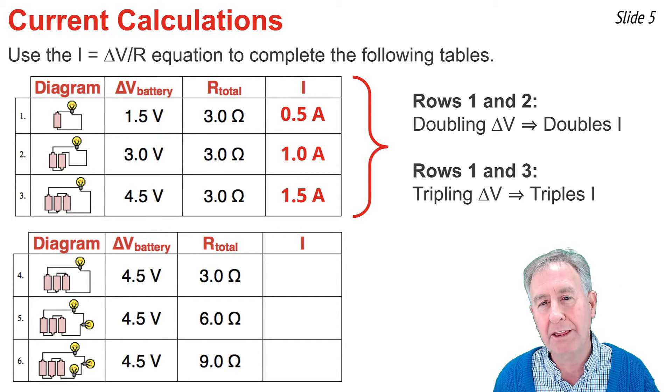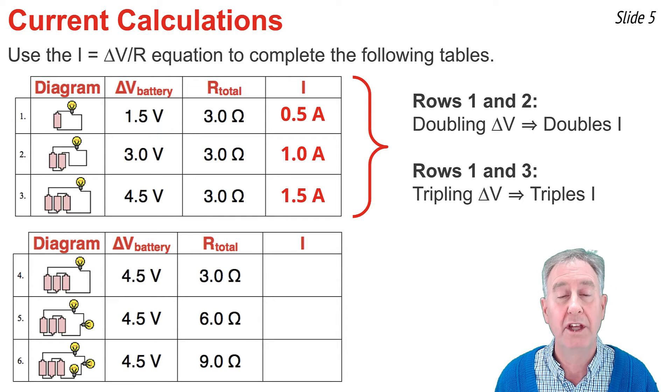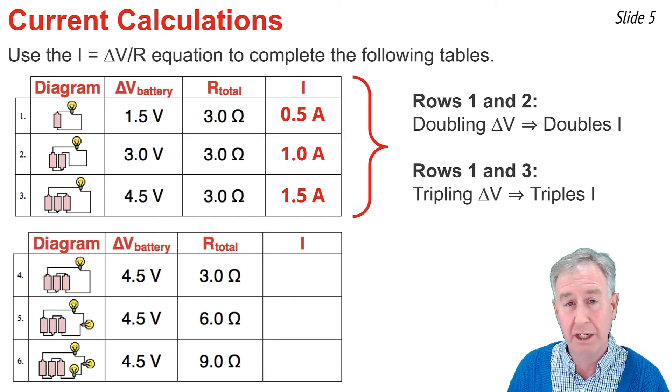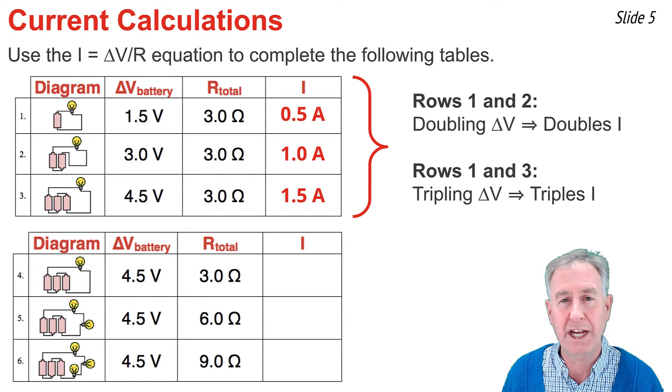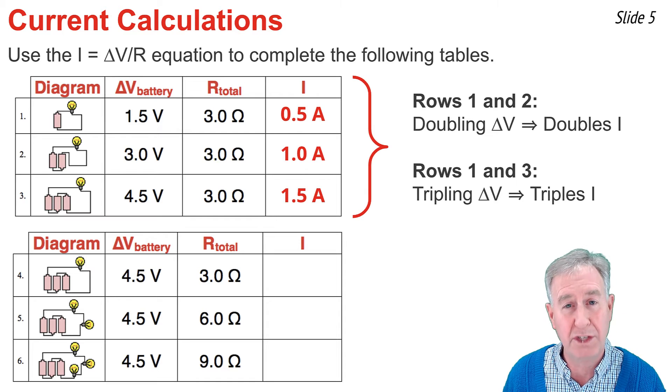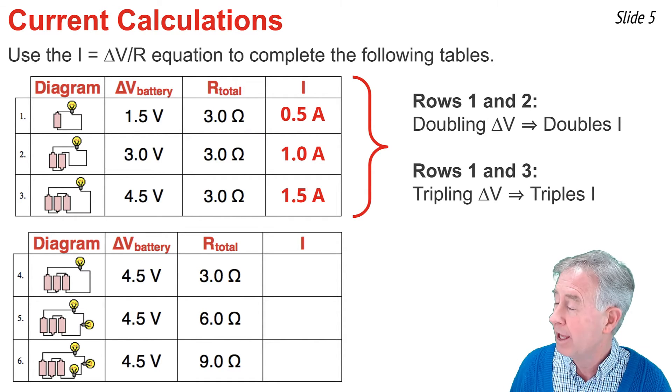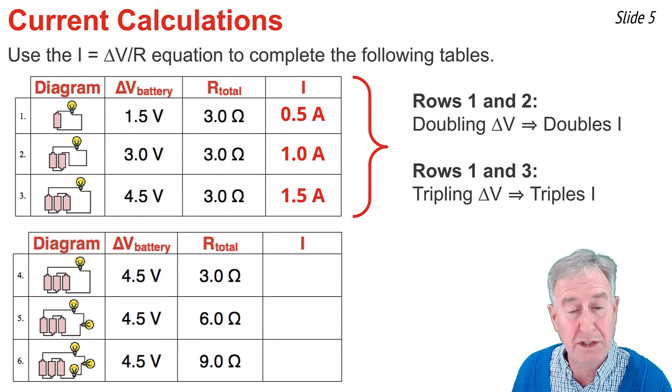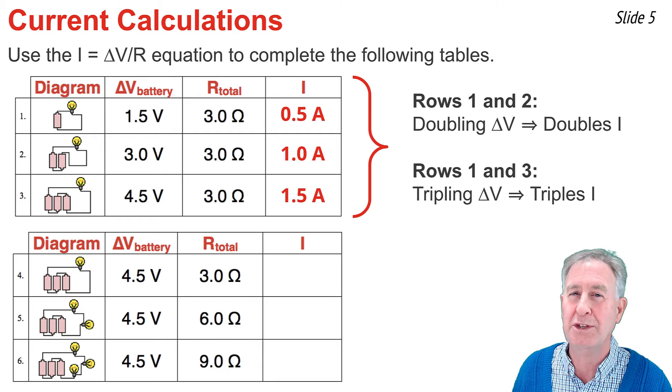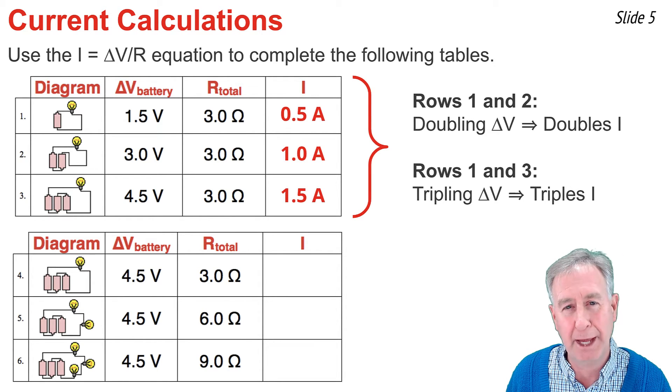Now let's inspect the bottom table. When I look at the bottom table, one thing I notice is that the number of cells is the same in each row. Three cells, thus the 4.5 volts is not changing in rows 4, 5, and 6. But what is changing is the resistance. If I look in the diagram, I notice I go from 1 bulb to 2 bulbs to 3 bulbs, and that causes resistance to change from 3 ohms to 6 ohms to 9 ohms.